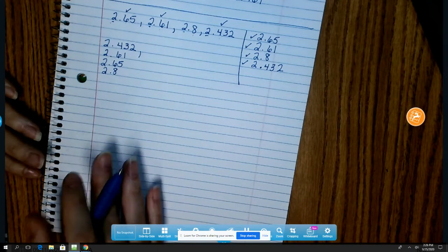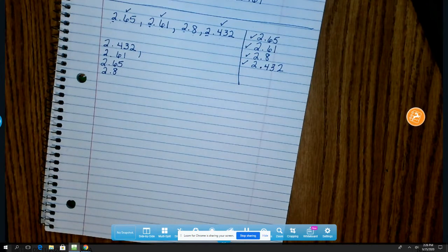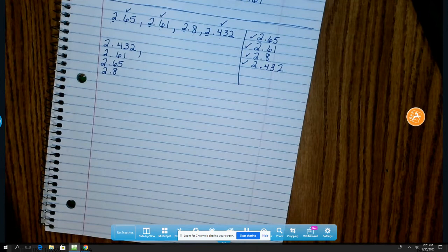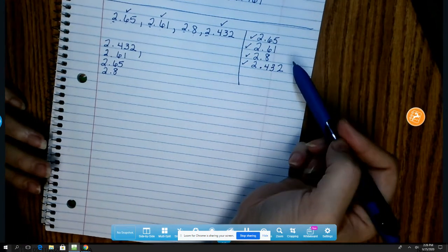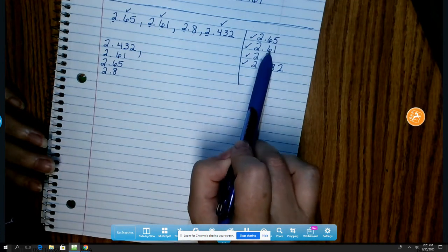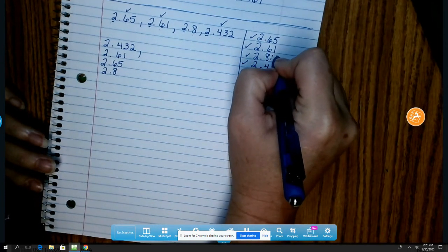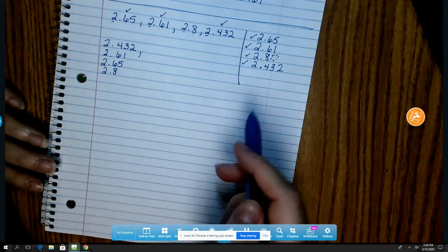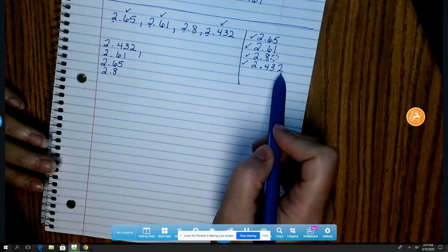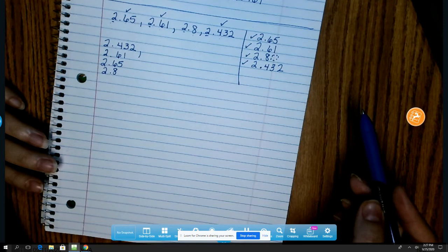One thing that you can do to help you with comparing things. Everybody is very interested in money, right? When I'm using numbers that have decimals, I kind of think of them as money. If I take a look here, this looks like 2 dollars and 65 cents, 2 dollars and 61 cents, 2 dollars and 80 cents, and then 2 dollars and 43 cents and part of another penny. If I look at them in terms of money, it can make it easier to compare numbers together. I hope this helps.